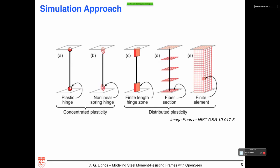There are various simulation approaches you could follow. You could use a concentrated plasticity approach — a combination of zero-length elements or springs with an elastic beam in the center. Alternatively, you could use a distributed plasticity approach, such as an element with a finite-length hinge zone, or a fiber-based approach. You could also use a finite element continuum approach, but that's not what we want to do here.